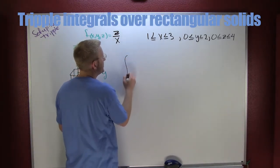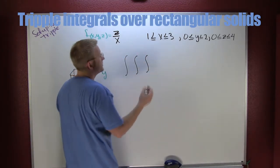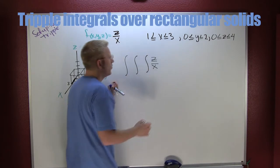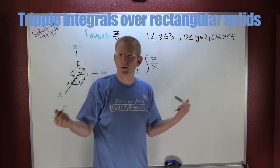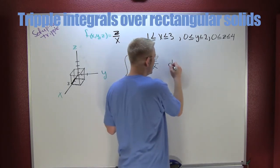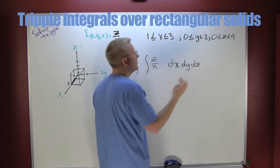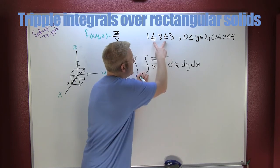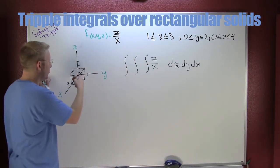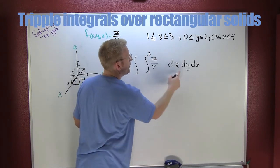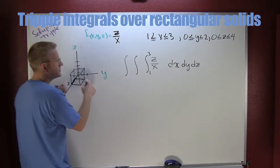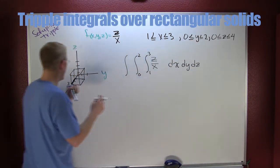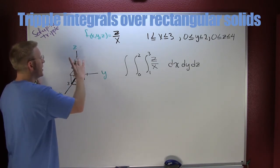So now I can set up my triple integral. Integrating over rectangles is really nice — you can go z, y, x or x, y, z; it doesn't matter. Let's go x, y, z: dx dy dz. Any order would be fine. The first integral corresponds to x, so I put my x limits from 1 to 3. My y is going from 0 to 2. And my z is going from 0 to 4.